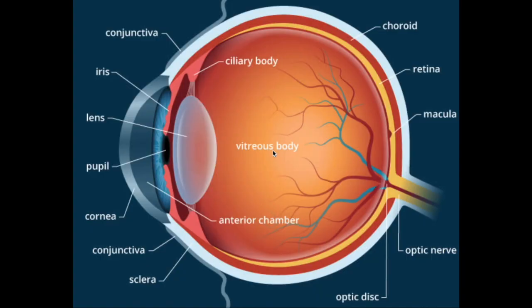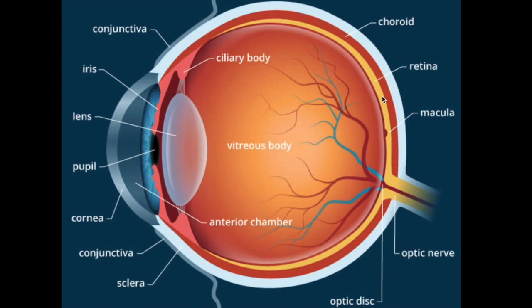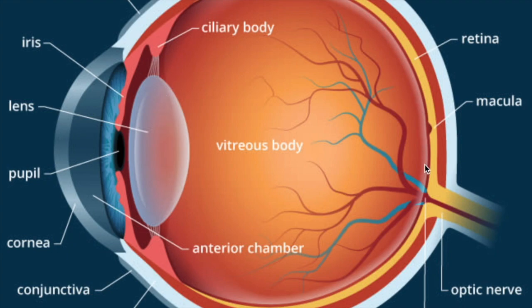Before we move on to the pathophysiology, symptomatology, diagnostics, and management of diabetic retinopathy, I'd briefly like to go over the basic anatomy of the eye. The basic structures we need to know are the retina, macula, optic nerve, retinal arteries and vein, vitreous body, lens, ciliary body, iris, pupil, and cornea. The space between the lens and the retina is taken up by the vitreous humor, and anteriorly by the aqueous humor.